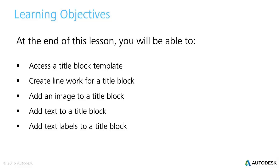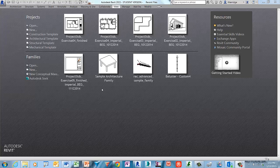Let's take a look at the learning objectives for the video five lesson plan. First, we'll access a title block template to begin the process of creating a title block from scratch. Then we'll add line work to that title block. Next we'll add a raster image to give it some flair. Then we'll add some fixed text, and lastly we'll add text labels, which are dynamic placeholders to host information displayed in the title block per the project information properties.